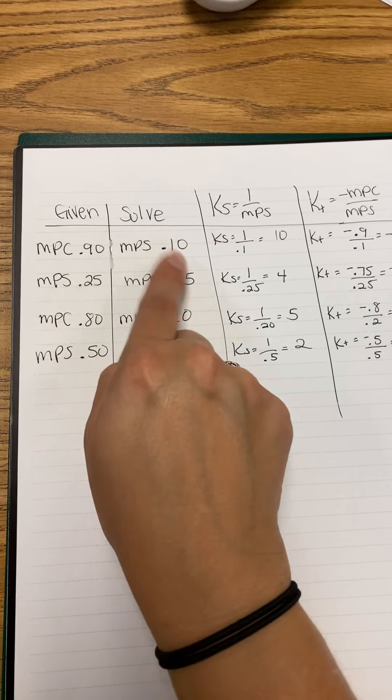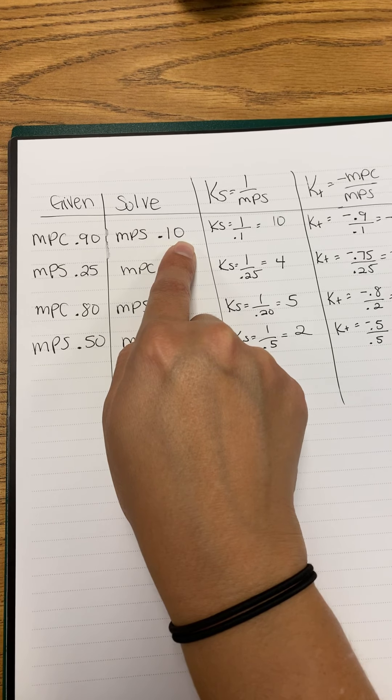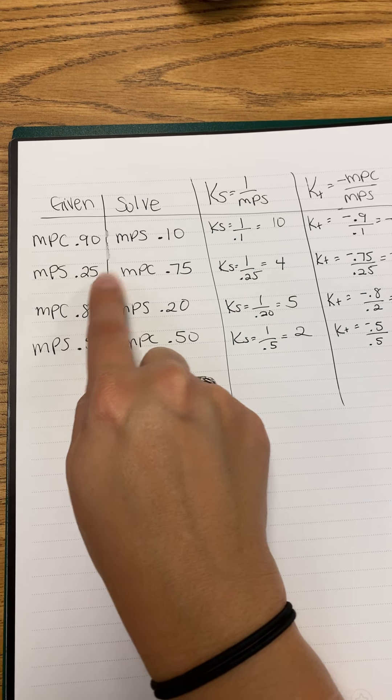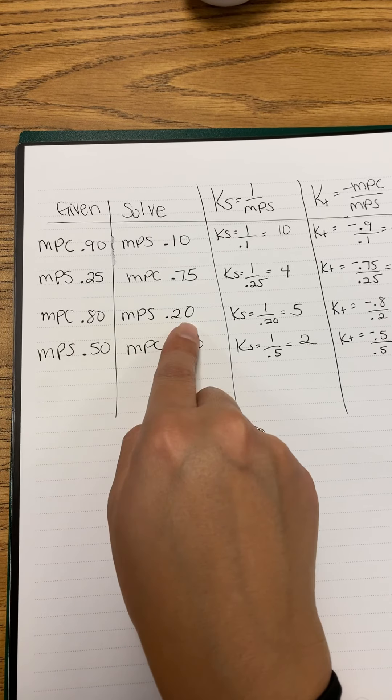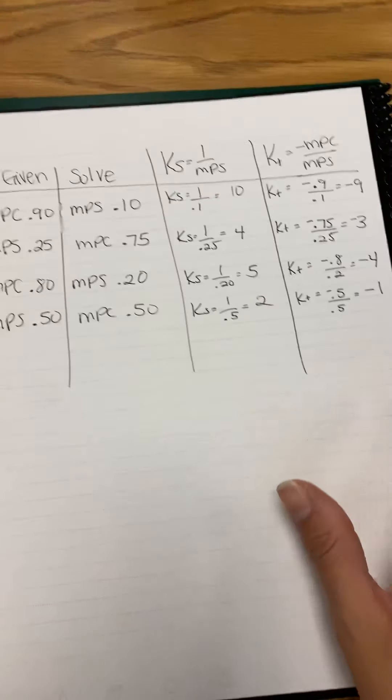Because remember, these two numbers added together equal 1. So 0.9 plus 0.1 is 1. 0.25 plus 0.75 is 1. 0.8, 0.2 equals 1. And 0.5 plus 0.5 is also equal to 1.